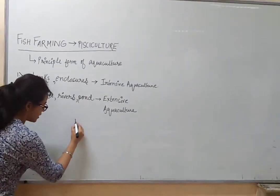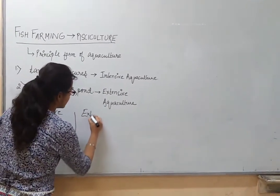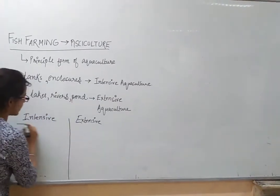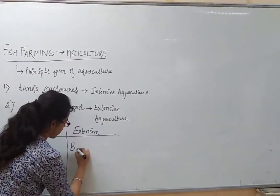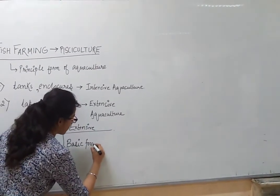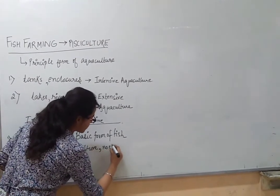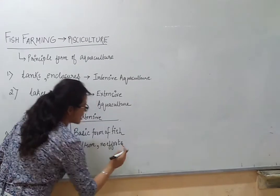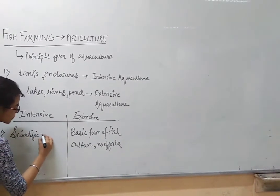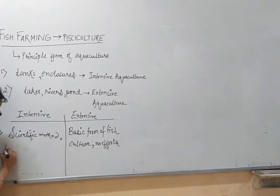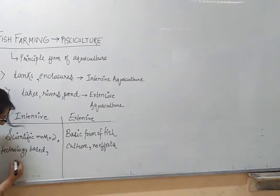The difference between intensive and extensive aquaculture: extensive aquaculture is a very basic form of fish culture where no efforts are required, since nothing is monitored. In intensive aquaculture, scientific methods are applied. It is technology-based, highly mechanized, and constant monitoring is done.